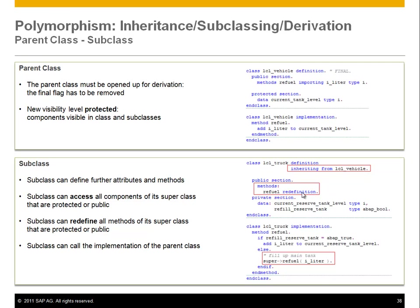Looking at the next red box, to fill up the main tank you call the superclass. The method refuel has a reserve tank. If you should also refill the reserve tank, you add liters to the reserve tank; otherwise you refuel the main tank. The refuel of the main tank is already implemented above, so you just call the method in the superclass using the predefined pseudo variable super — basically a reference to yourself as the instance is concerned. If you call refuel here, you get this class's version. If you call super->refuel, you call the superclass implementation. Whatever code is right for everyone you can call that way, and otherwise you change the implementation in the subclass.